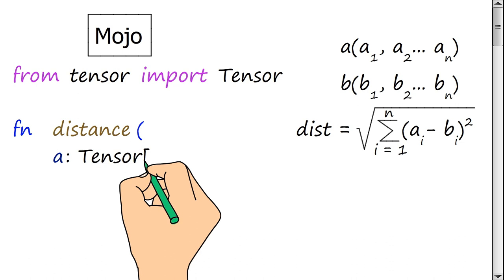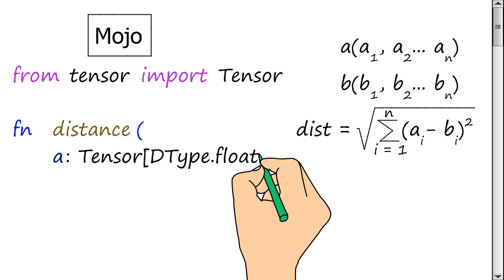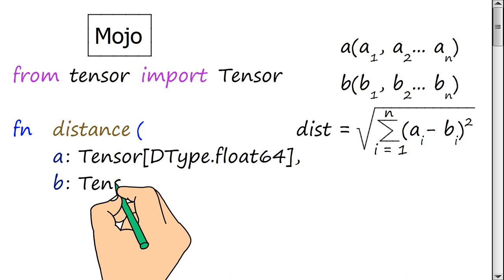The function takes two input arguments, which are the coordinates of the points. Each tensor coordinate is represented by a floating point number.